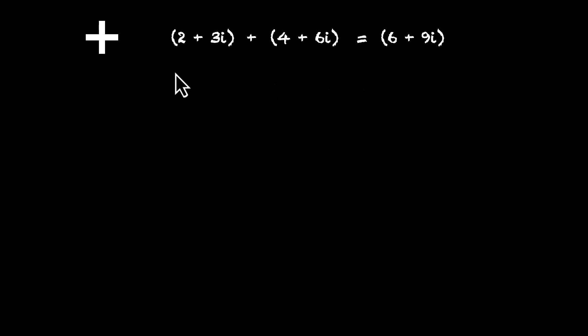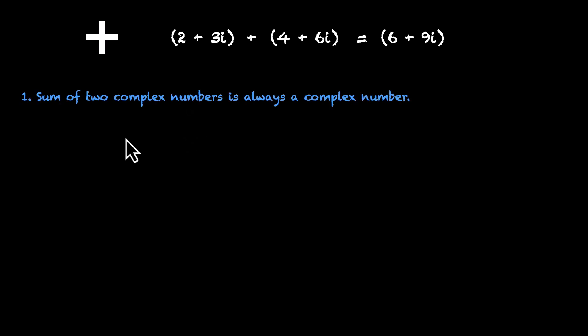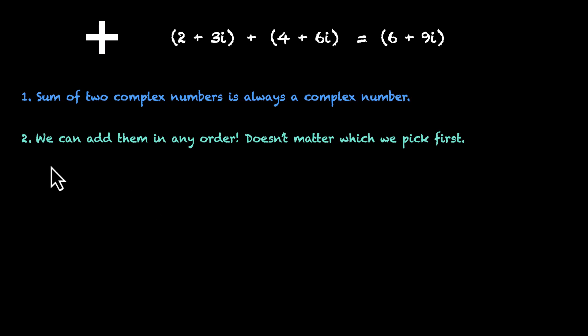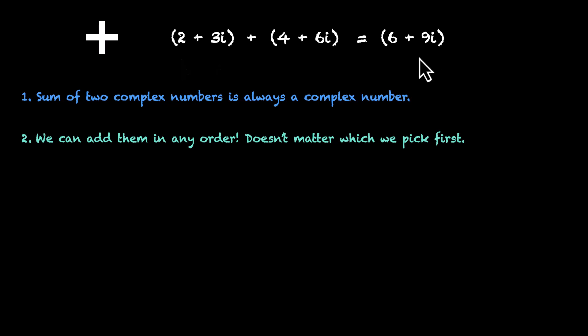Now let's talk about some properties. The first one says the sum of two complex numbers is always a complex number — pick any two and add them, you will always end up with another complex number. The next one says we can add them in any order; it doesn't matter which we pick first. If we start with 4+6i and add 2+3i, we still get the same answer. The order does not matter.